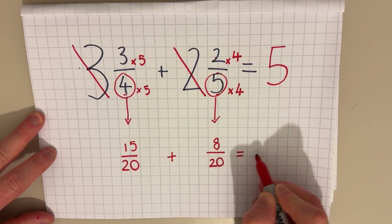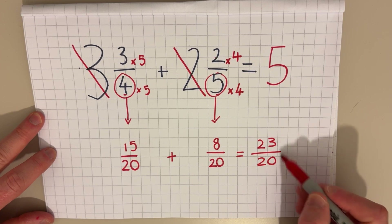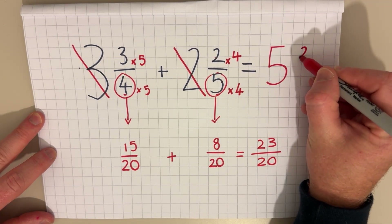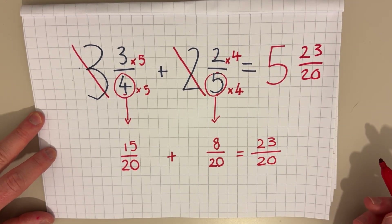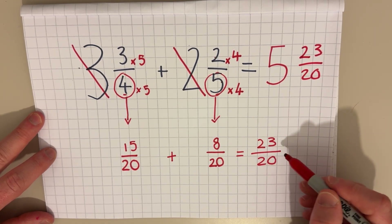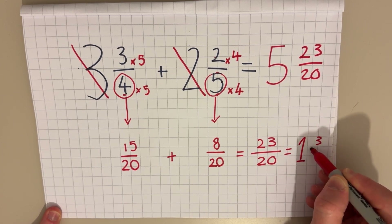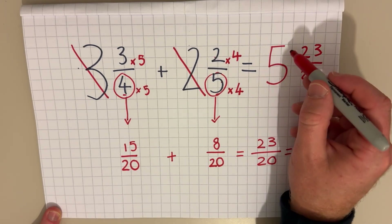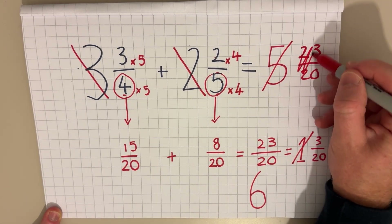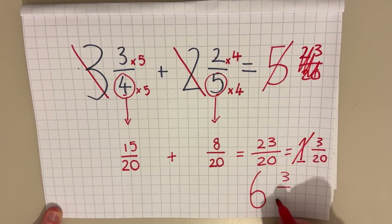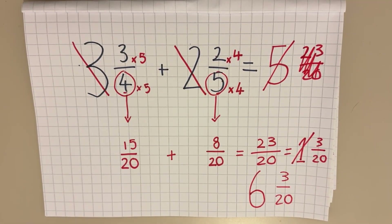Fifteen twentieths add eight twentieths makes 23 twentieths. But now I've got a problem because I have an improper fraction — I'm not allowed to write the answer as five and 23 twentieths. So I need to convert 23 twentieths into a mixed number: that's one and three twentieths. Then I add that whole number to five to give me six, and the fraction is three twentieths. So the final answer is six and three twentieths.